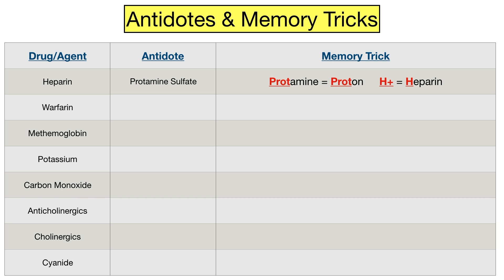The next drug is warfarin, which is also a blood thinner. Vitamin K can be used to reverse the effects of warfarin. There are a couple tricks to remember vitamin K. First, warfarin and vitamin both end in I-N, and you can also think of the phrase 'war kills' to help you remember war for warfarin and the K for vitamin K.